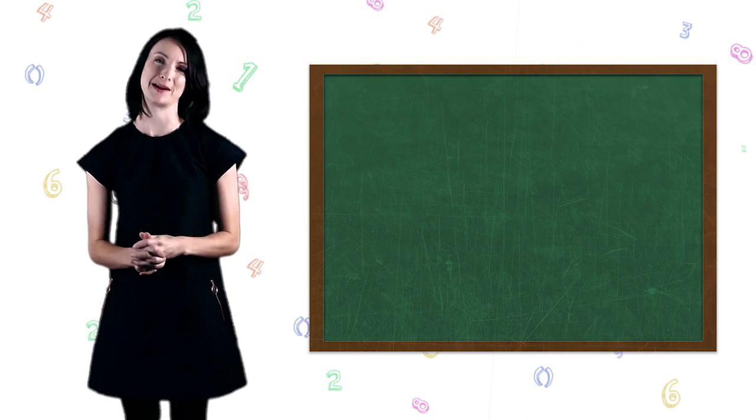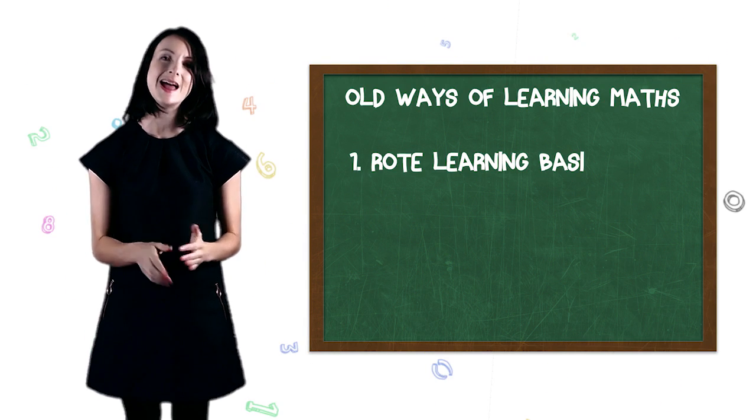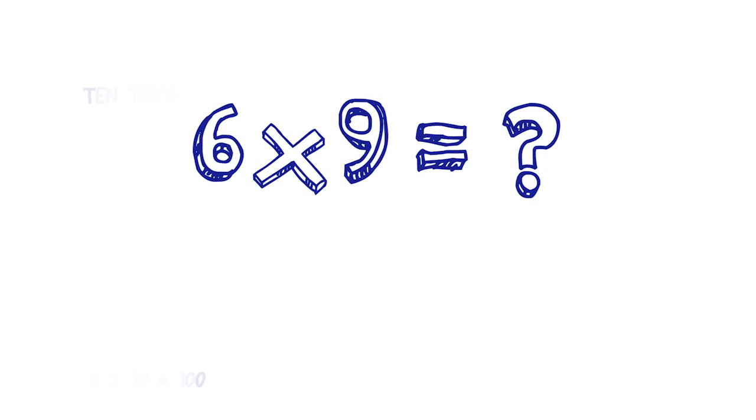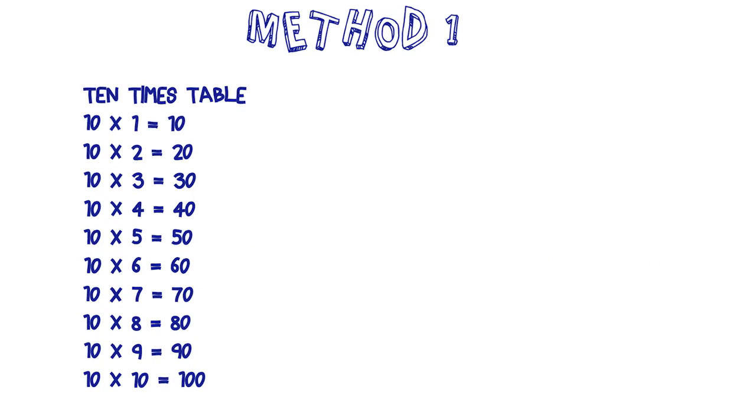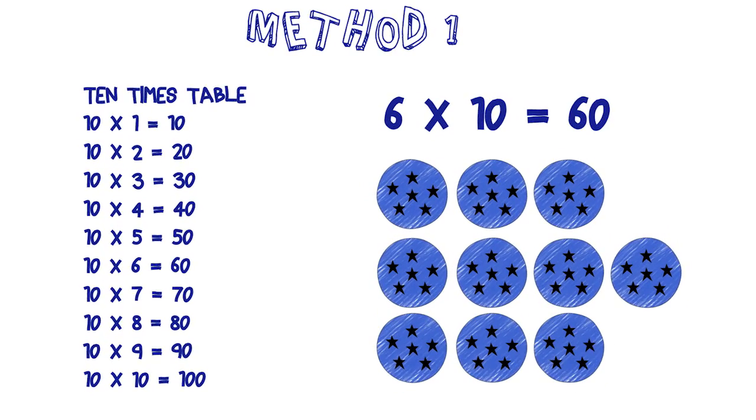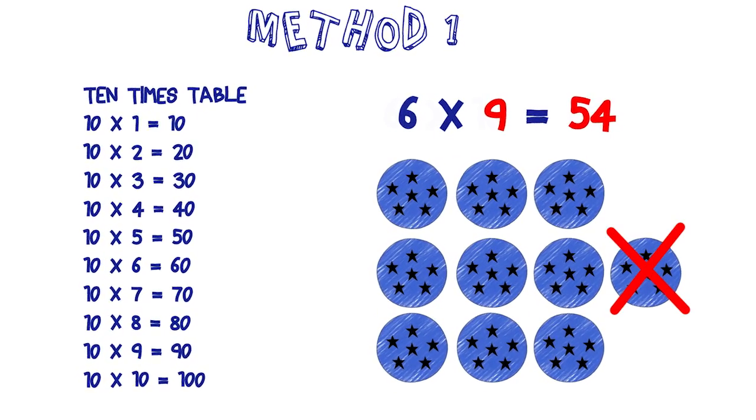Our parents and our grandparents probably learned maths by rote learning the basic facts and by using traditional written methods. These days children are learning multiple methods for solving maths problems. For example, consider the maths problem six times nine. There are multiple methods for working out the answer. One is that you can use your ten times tables. So you go six times ten is 60, and then you subtract one group of six from that to get 54.